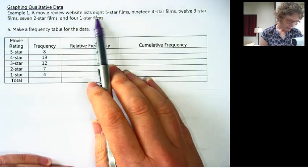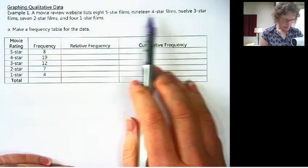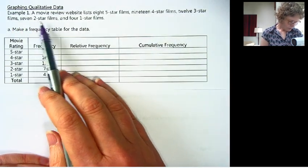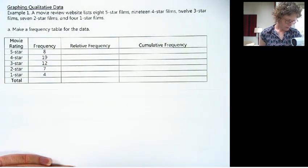So on their website they have 8 5-star films, 19 4-star films, 12 3 stars, 7 with 2 stars, and 4 with 1 star.